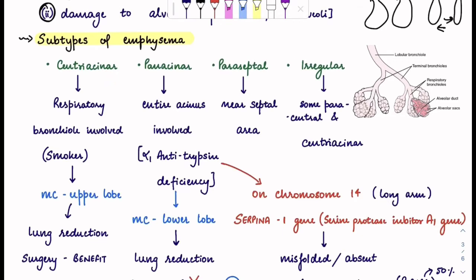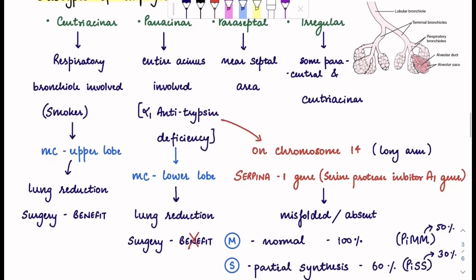In centriacinar, two important things to remember: it is common in smokers and it usually involves the upper lobe. There is lung reduction surgery and it usually involves the upper lobe, so lung reduction surgery actually benefits in centriacinar emphysema. In panacinar, the two points are: it is common in alpha-1 antitrypsin deficiency and it most commonly involves the lower lobe. Lung reduction surgery has no benefit here.